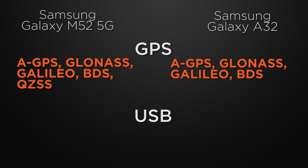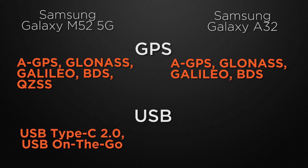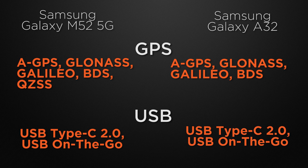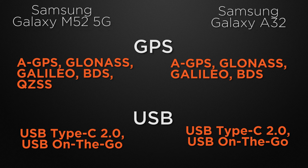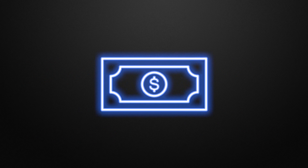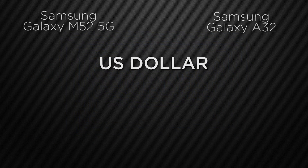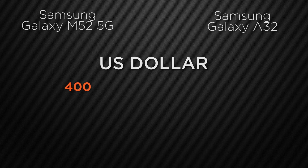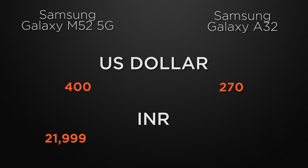About USB connectivity, both the M52 and A32 come with a 2nd-gen Type-C connector with OTG support, so it's a tie. Moving to the price in the international market, the M52 is around $400 whereas the A32 is available from $270. In the Indian market, the M52 starts from 26,000 rupees whereas the A32 is available from 22,000 rupees.